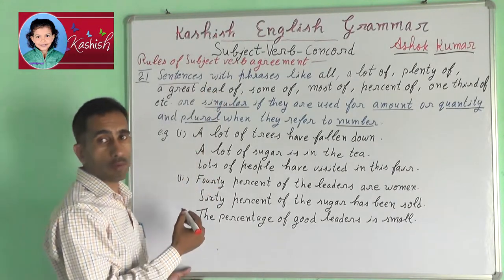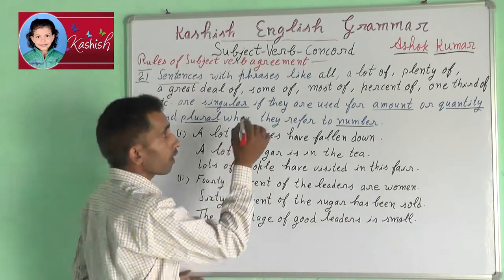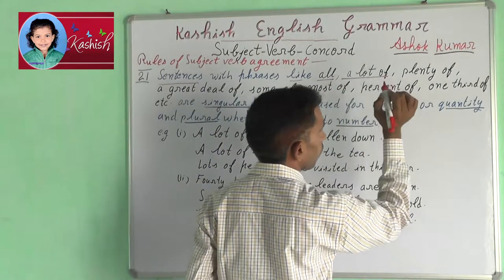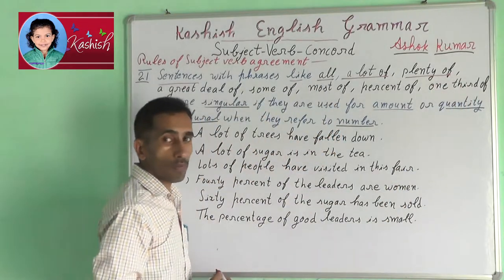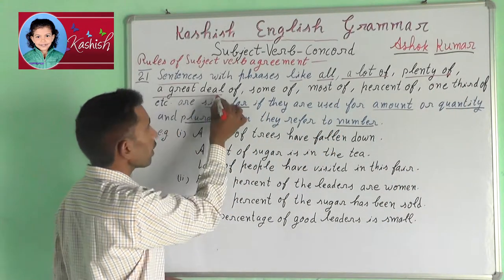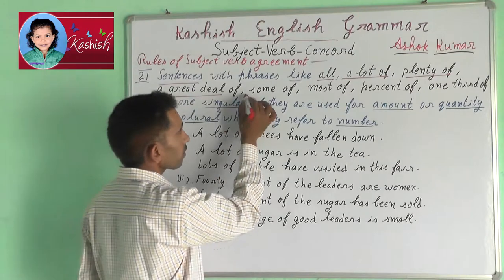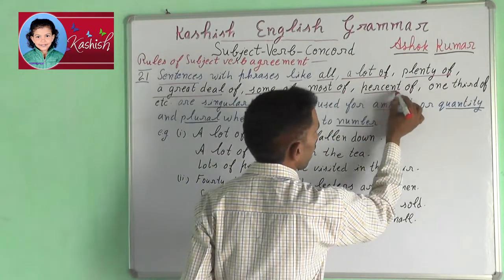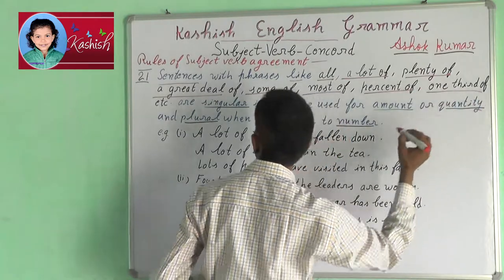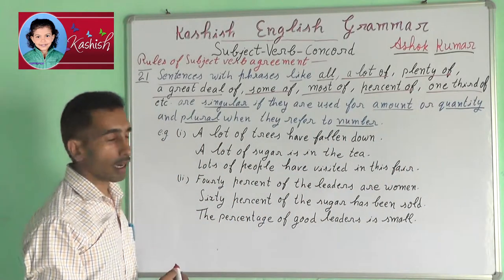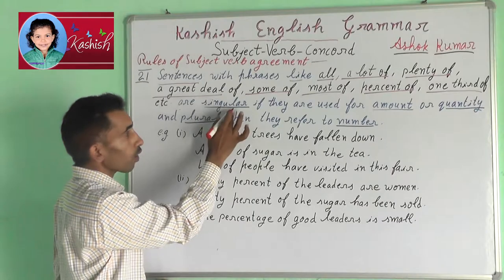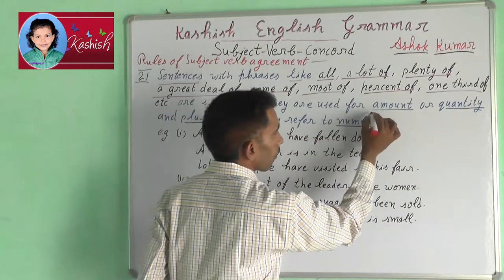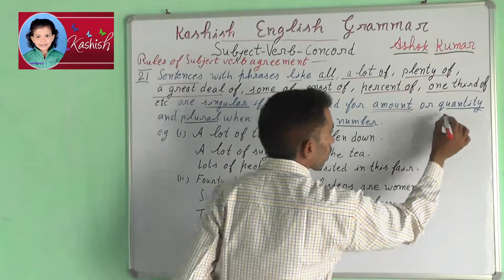Rule 21. Sentences with phrases like all, a lot of, plenty of, a great deal of, some of, most of, percent of, one-third of, etc. Sentences are singular if they are used for amount or quantity.